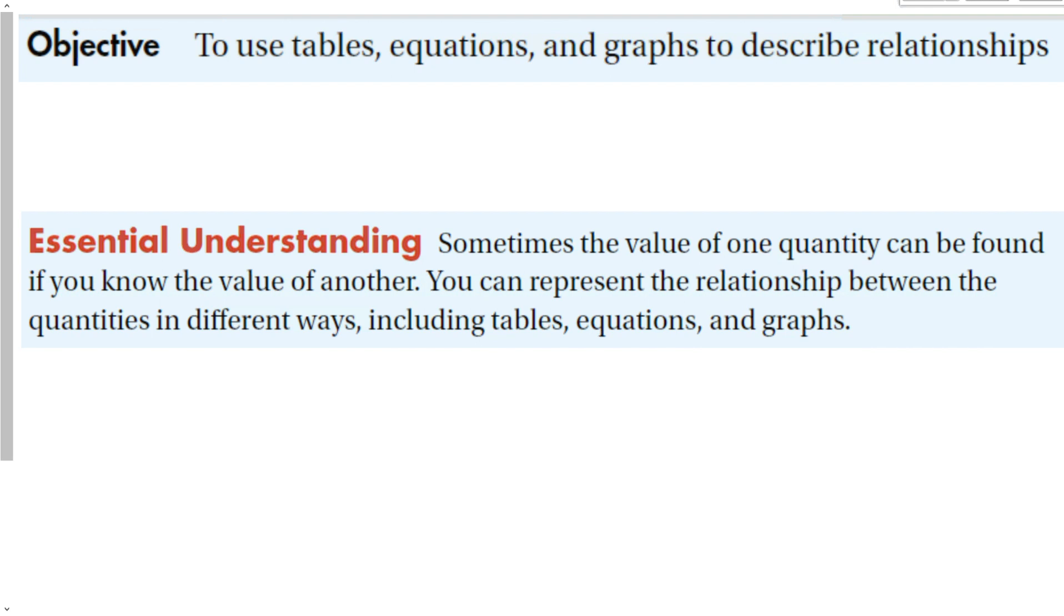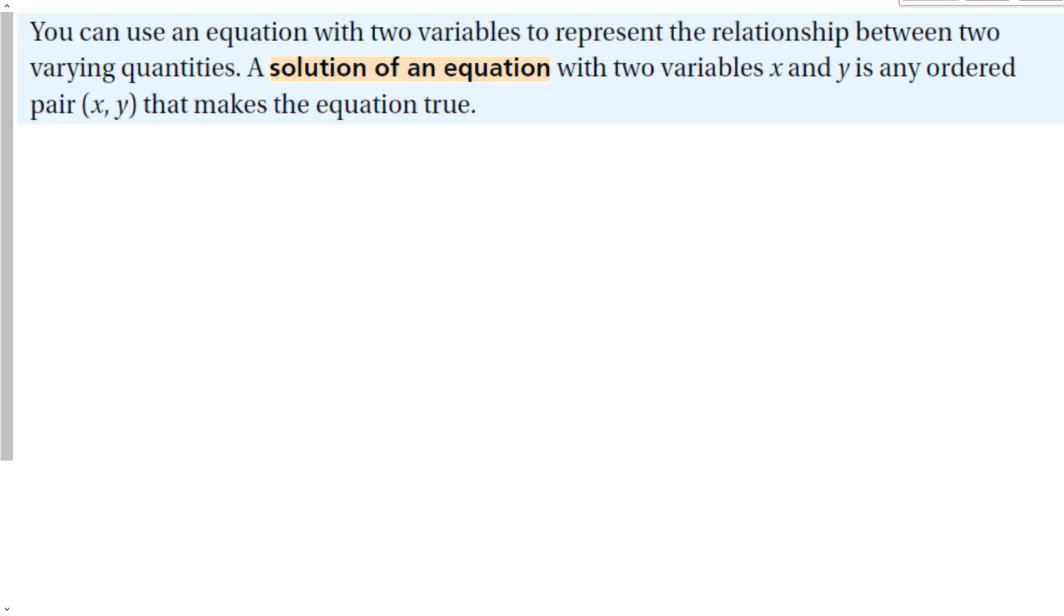This is going to be a pretty short section, and basically we're just going to talk about how to use three different ways to represent data: tables, equations, and graphs. We can use an equation with two variables to represent the relationship between two varying quantities. A solution of an equation with two variables x and y is any ordered pair that makes the equation true.